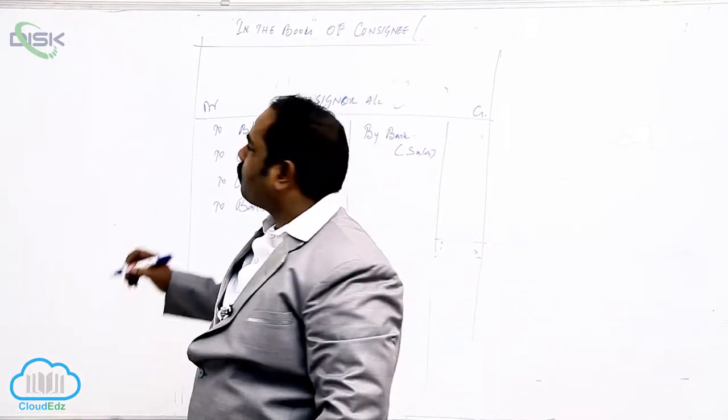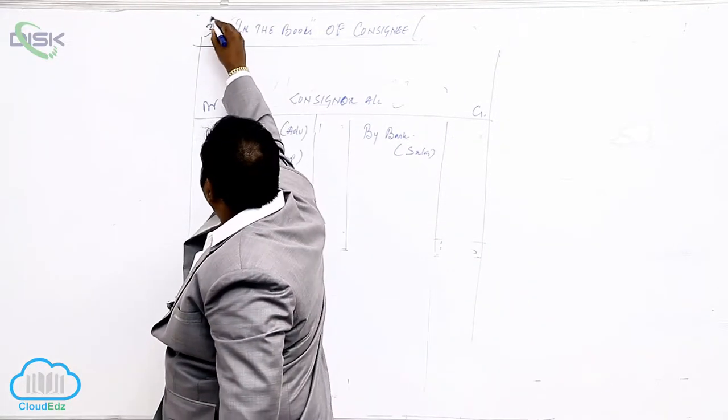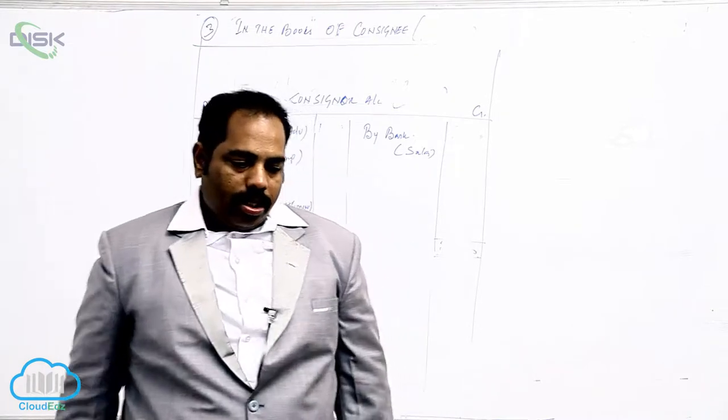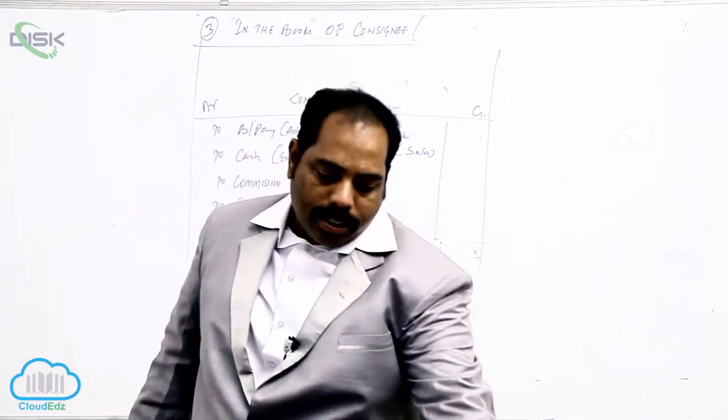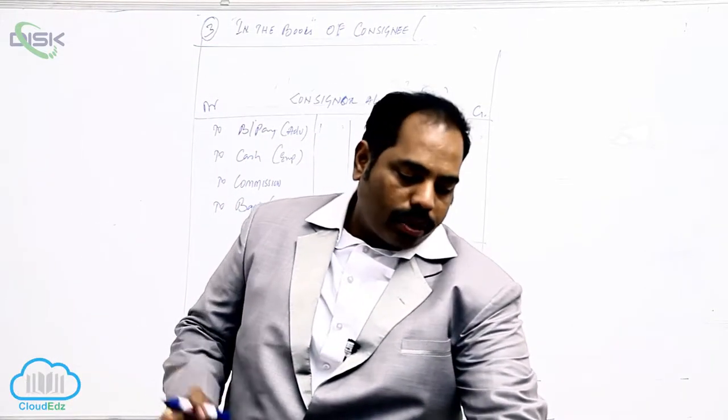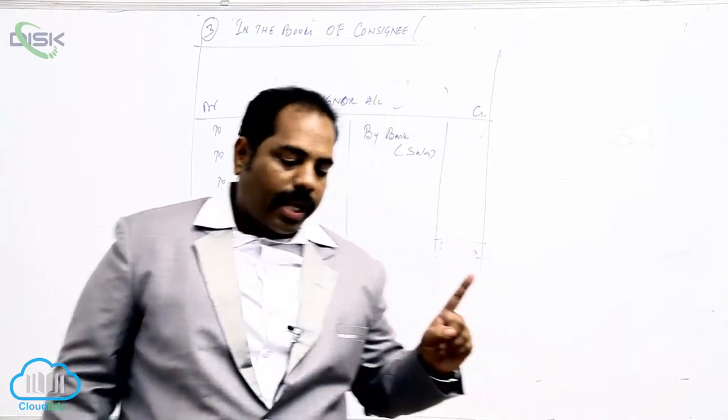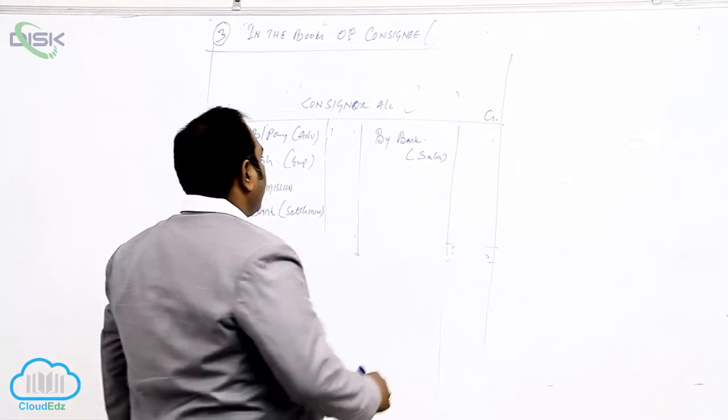Krishna of Mumbai and Gopal of Chennai are in consigning business. Gopal sent goods to Krishna. So Gopal is consigner and Krishna is consignee.